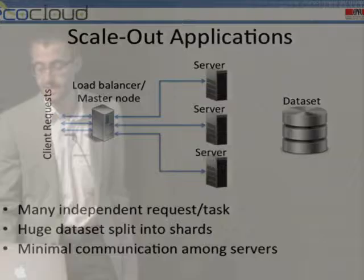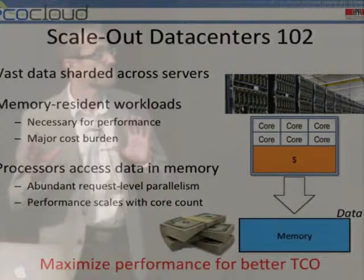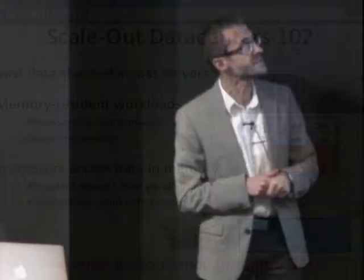What does scale-out mean? There are three fundamental characteristics: there are many independent requests or tasks, so there's significant request-level parallelism. We have a huge data set that is distributed across many nodes or sharded. And there's minimal communication among the servers. The latter two properties — distributed data and minimal communication — are basically an enabler to exploit this very rich request-level parallelism fairly inexpensively. In other words, we can do scale-out as opposed to the scale-up model.